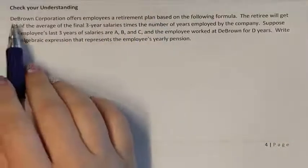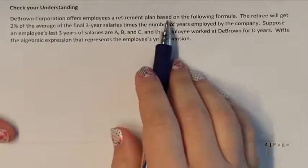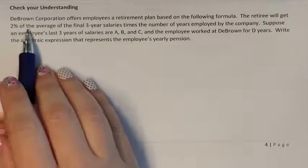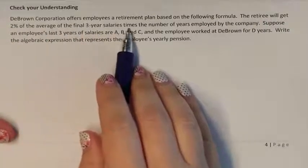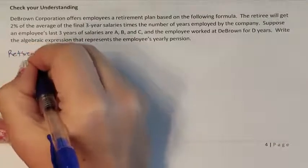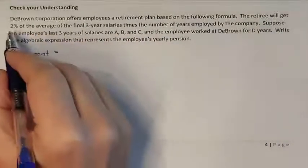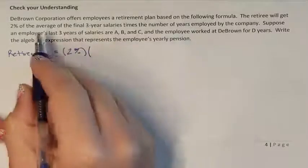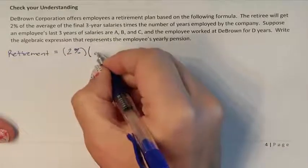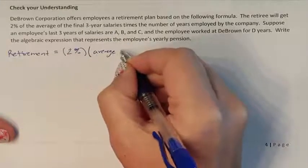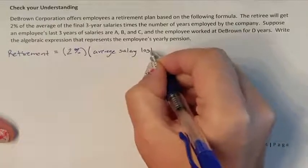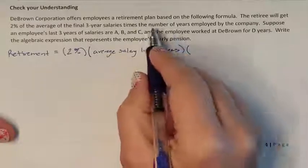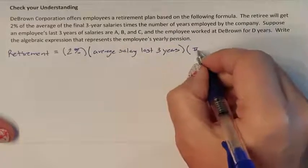Now let's check your understanding. The Brown Corporation offers employees a retirement plan based on the following formula: the retiree will get 2% of the average of the final 3 years' salary. So here is the retirement plan. It is based on 2% of — meaning we're multiplying — the average salary for the last 3 years, multiplied by the number of years in the company — so times the number of years worked.